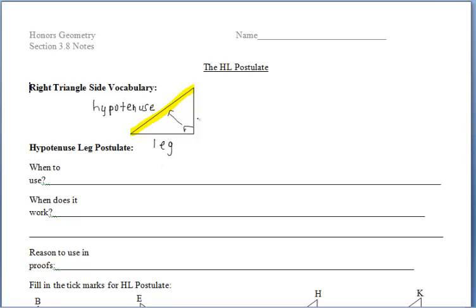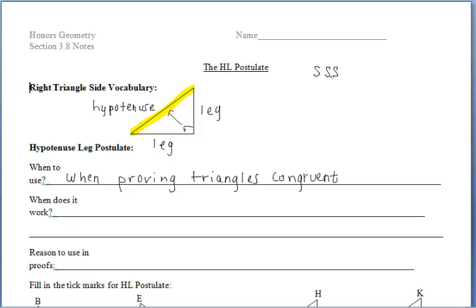When are we going to use HL in this class? We're going to be using HL to prove triangles congruent. Just like we had talked about SSS, SAS, ASA, HL is now a fourth option — a fourth way to prove triangles congruent.